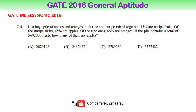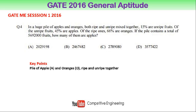There are 4 options for this question. After reading the question, you have to extract some key points. The key points are: the pile of apples and oranges contains 2 fruits — apples and oranges — and both are ripe and unripe together.